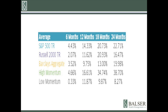I use the six portfolios formed on size and momentum series. This series allows me to focus on large cap and mid cap stocks so the results aren't skewed by low liquidity stocks. This series is also a conservative measure of momentum because it separates the universe into three momentum buckets instead of the usual five or ten buckets.